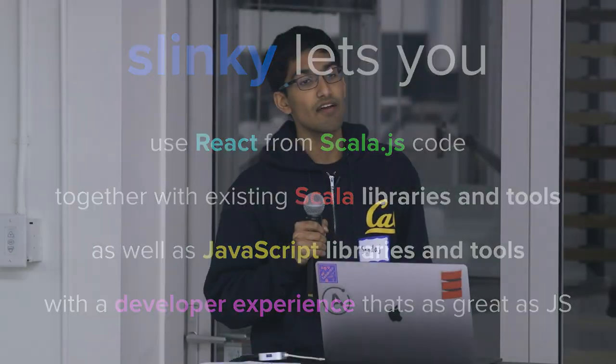Slinky makes it super easy to use existing JavaScript libraries from your Scala code, and has a developer experience as great as JavaScript. When developing with JavaScript, you can save in your editor and by the time you switch back to your web page it'll be automatically hot loaded and everything updated. Slinky brings that same developer experience to writing Scala apps.